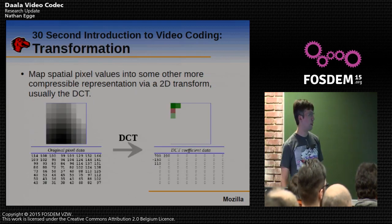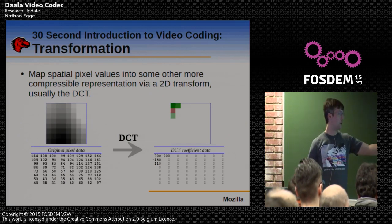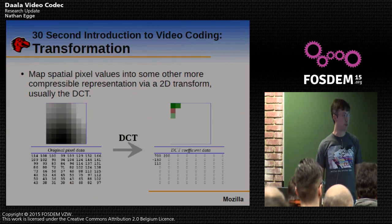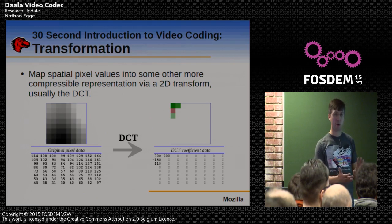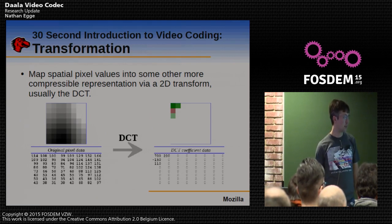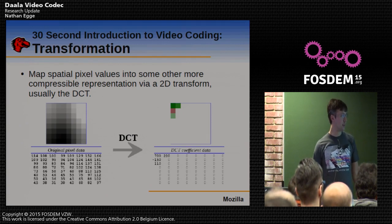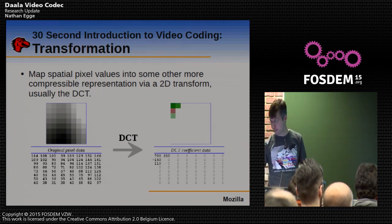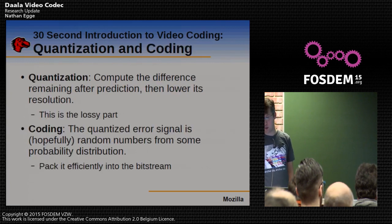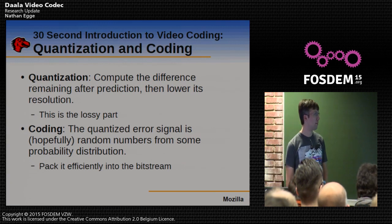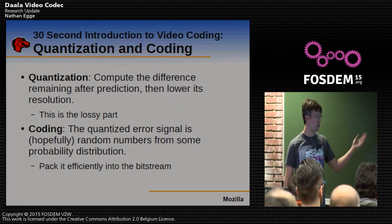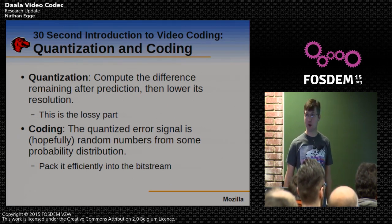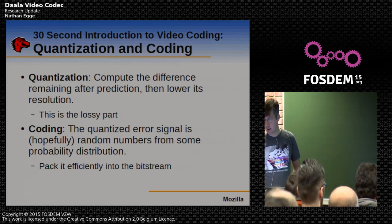For transformation, most codecs use a 2D DCT, which takes spatial image information — image pixels — applies a transform into a more sparse domain, keeps just the highest coefficients, and uses those as what it codes. This gives great compression but is also responsible for the blocky edges you see in codecs like JPEG. Quantization is where we take those transformed coefficients, reduce the number of bits used to represent them, and run them through an entropy coder that converts them into numbers with a sufficient probability distribution.